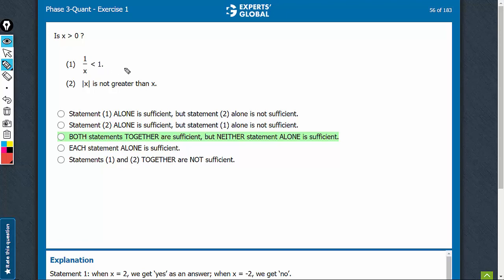1 upon x is less than 1 is possible for a case such as 1 upon 5 is less than 1. In this case, we will get yes as an answer, that x is greater than 0.